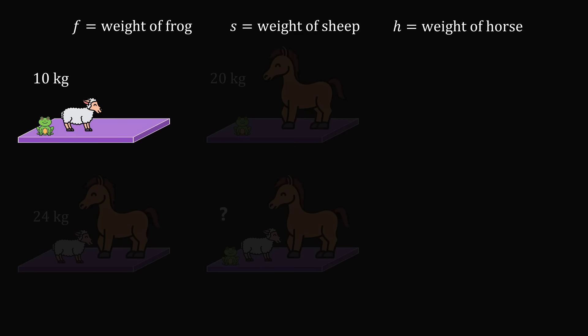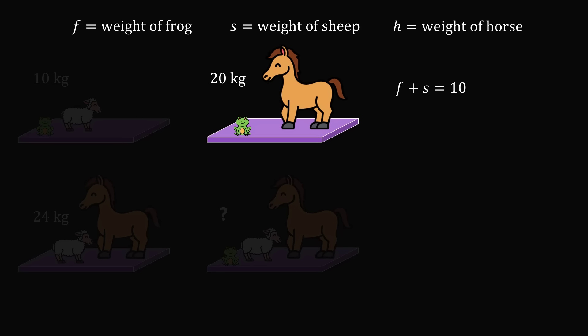Let's focus on the first diagram. We have the combined weight of the frog and the sheep is 10 kilograms, which means F plus S is equal to 10. Let's now go to the next diagram. We have a frog and a horse, which have a combined weight of 20 kilograms, so F plus H is equal to 20.